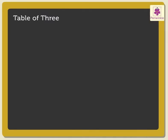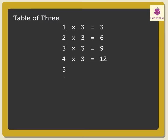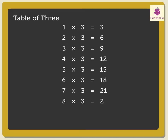Now the table of 3. 1 three is 3. 2 threes are 6. 3 threes are 9. 4 threes are 12. 5 threes are 15. 6 threes are 18. 7 threes are 21. 8 threes are 24. 9 threes are 27. 10 threes are 30.